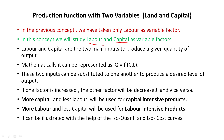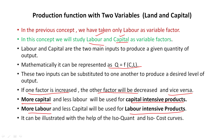Labor and capital are the two main inputs to produce a given quantity of output. Mathematically, the two-variable production function is represented as q = f(c, l). Both capital and labor can be substituted for one another to produce a desired level of output. If one factor is increased, the other is decreased, and vice versa. More capital is used for capital-intensive products and more labor is used for labor-intensive products. This can be illustrated with the help of two concepts: iso-quant and iso-cost curves.